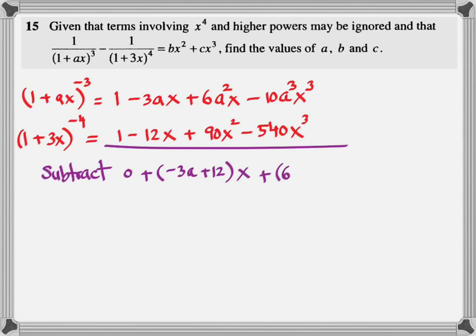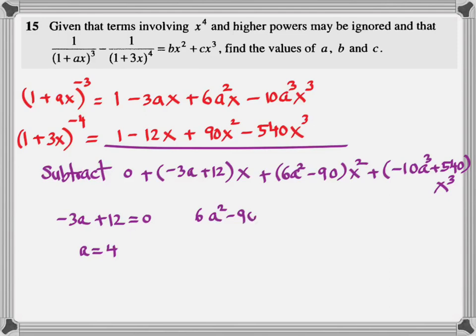And, you add up all the terms. Once you have collected all the terms, now it's time for comparing coefficient. -3a + 12 should equal to 0. You'll find the value of a. Second one, plug in the value of a. Comparing coefficient, you'll find the value of b. Third one, plug in a again. And, you will find the value of c.